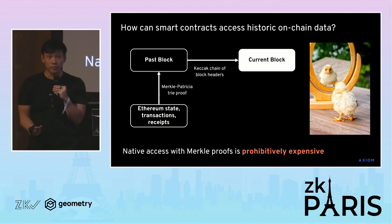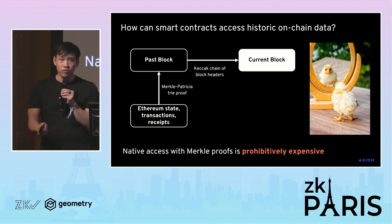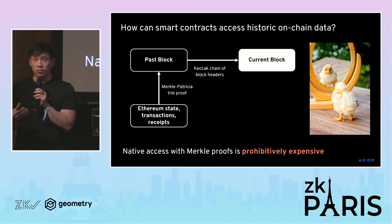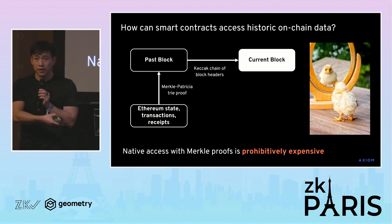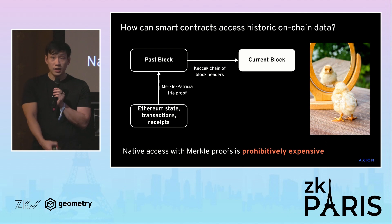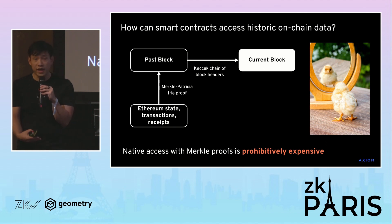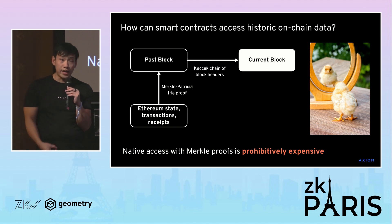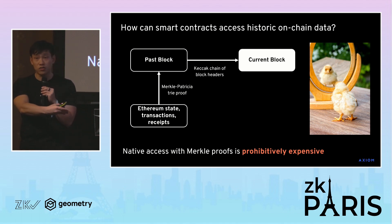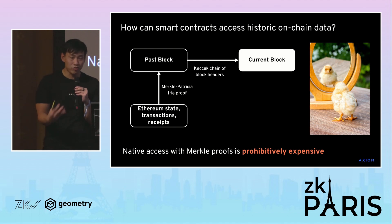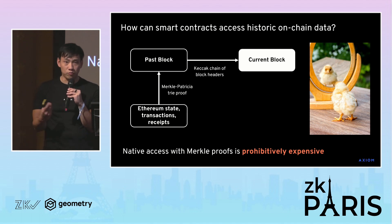Let me talk through how that's even possible. If you have a smart contract, it has access to the current block hash of Ethereum. That block commits to the previous block, which commits to the previous block, all the way back to the genesis block. Each block commits to the state and all transactions and receipts in that block. If you were to try to access Ethereum history naively in a smart contract, you'd provide a Merkle proof of a transaction into a previous block header — and if that's a block header a million blocks ago, you'd provide all million intermediate block headers, then check the Merkle proof and the chain of Keccak hashes of those block headers. Of course, that's extremely expensive and you can probably access only a very small amount of data this way.